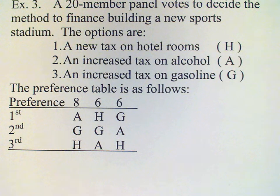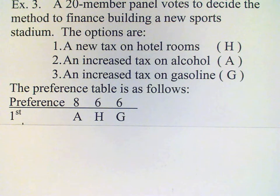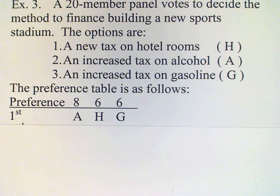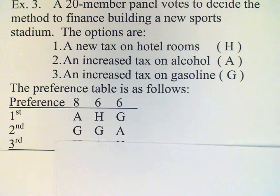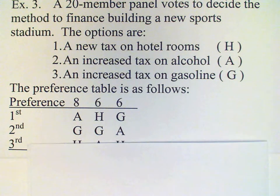We have A with eight first-preference votes, and H and G with six each. So according to this preference table, the increased tax on alcohol would be chosen. But now let's say that the hotel lobby succeeds in removing H as an option. If we remove that option from the list, then what happens to these six votes?